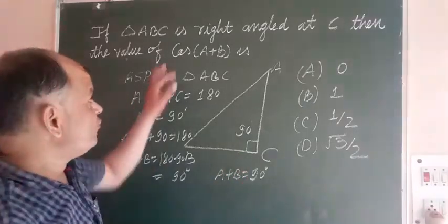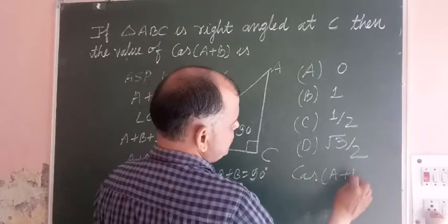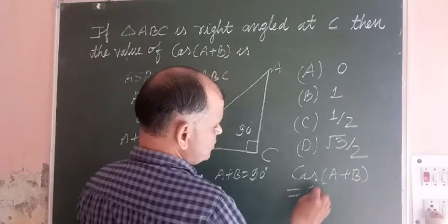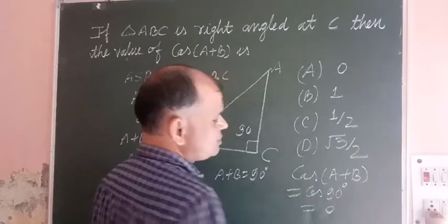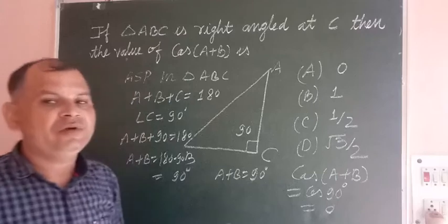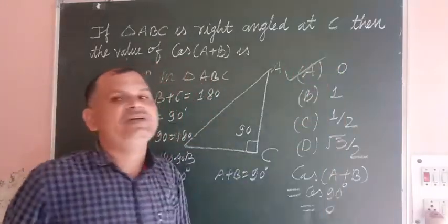Now we want to find out cos(A+B). Cos(A+B), we put the value of A plus B so cos 90, and you know the value of cos 90 is 0. So the answer to this question is option A which is 0.